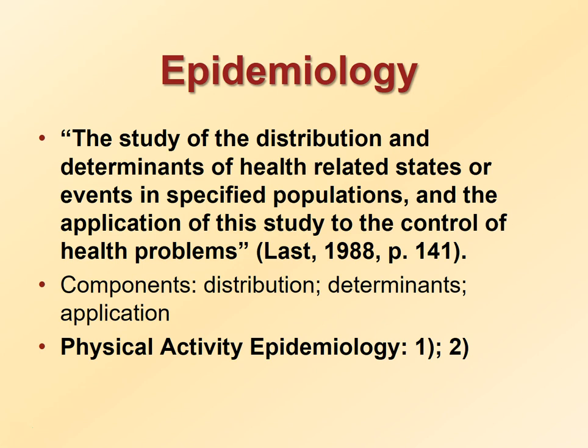There are two fundamental assumptions in epidemiology. First, human disease is not random. Second, human disease has causal and preventative factors that can be identified through scientific investigation of different populations or subgroups of individuals within a population (Hennekens, 1987). The primary goal of epidemiology is to identify the determinants of health and disease to decrease mortality and morbidity within a population.